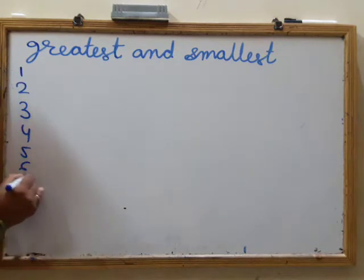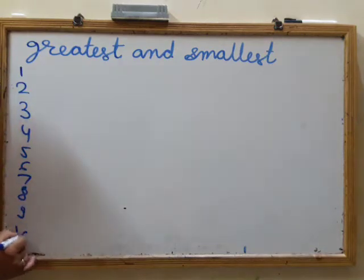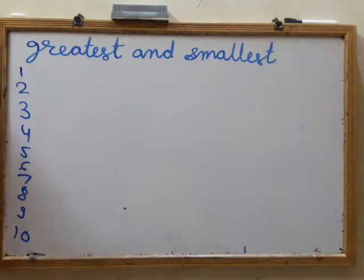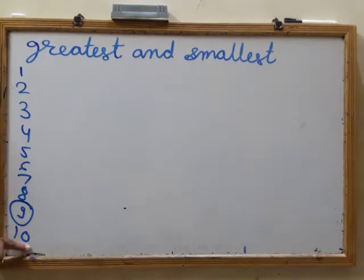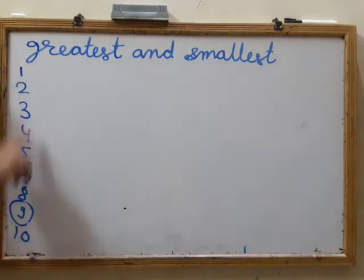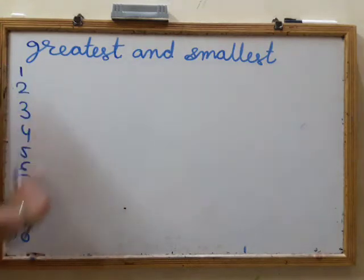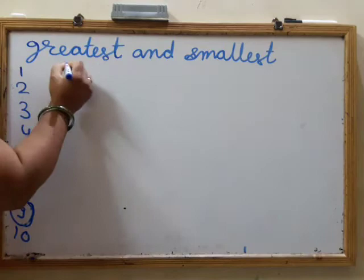Which is the greatest one-digit number? The greatest one-digit number is nine, because when we go next to nine it is 10, 11 — always two-digit numbers. We can't find any number bigger than nine among single-digit numbers. So nine is the biggest: the greatest one-digit number is nine.